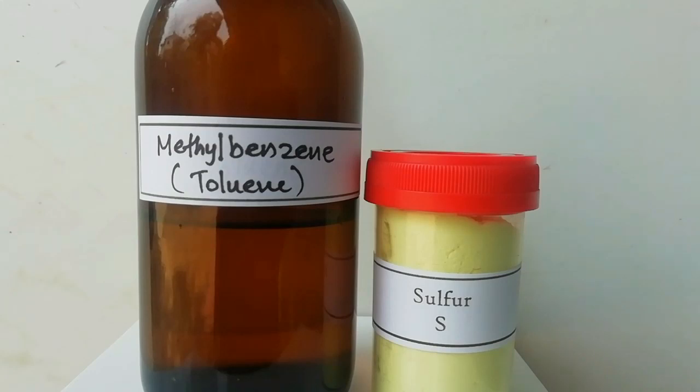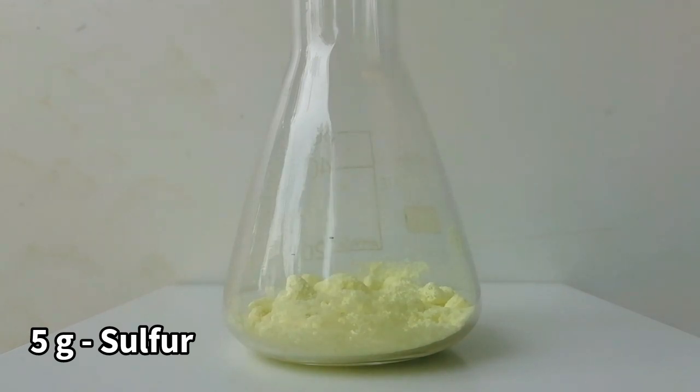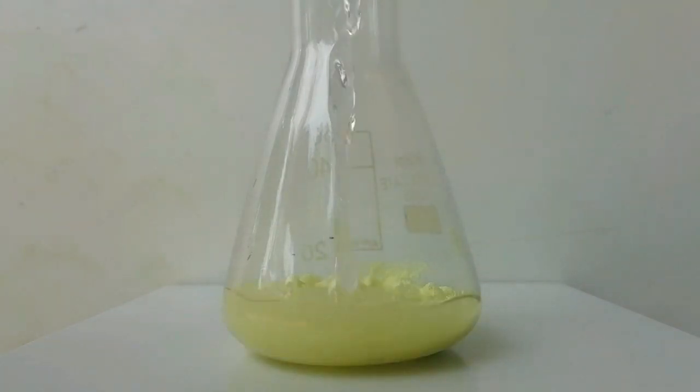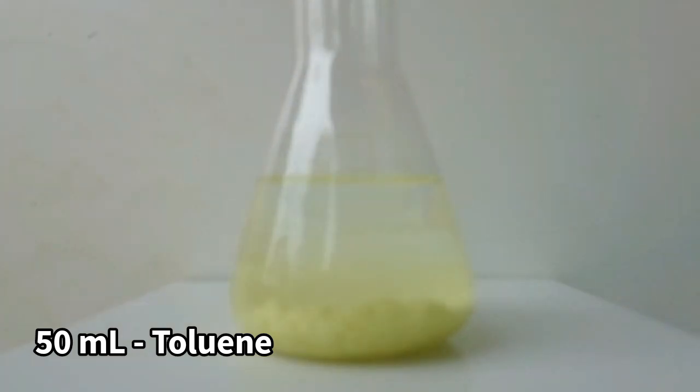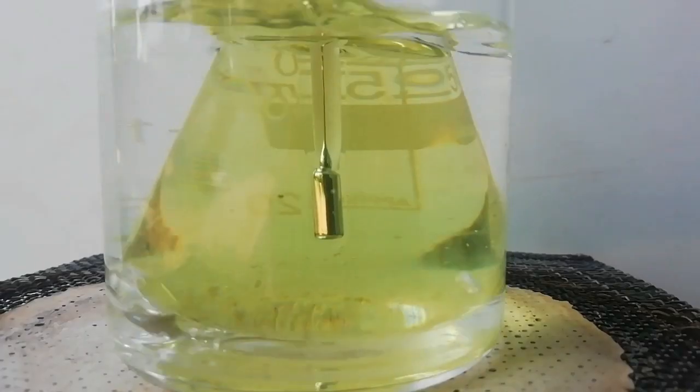For this experiment, first a flask is filled with 5 grams of crushed sulfur. Then 50 milliliters of toluene is poured in.